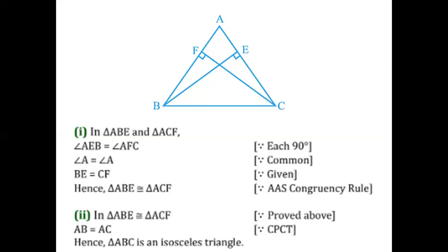Since triangle ABE is congruent to triangle ACF, the corresponding part AB of triangle ABE is equal to the corresponding part AC of triangle ACF — by CPCT, the corresponding parts of a congruent triangle are equal. Now, since AB is equal to AC, I can clearly conclude that triangle ABC is an isosceles triangle. I hope the solution to this question was clear and easy for everyone.